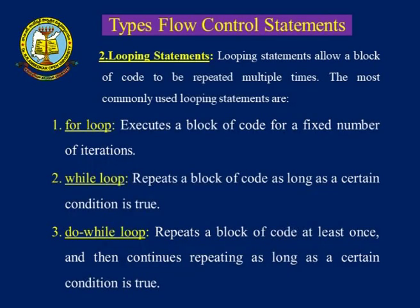The next loop is the while loop. The while loop repeats a block of code as long as a certain condition is true. If the condition is true, the block is repeated n number of times until the condition becomes false. For example, if I want to repeat it 10 times, it will execute the first time, verify again for the second time, third time, and so on until it reaches 10 iterations — then it comes out of the loop.